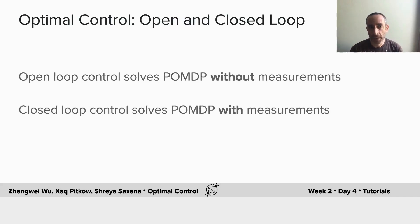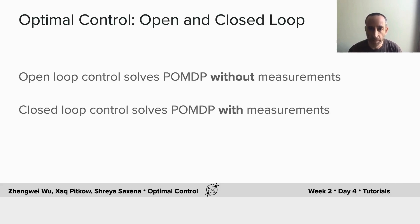There's a distinction between open and closed loop control in optimal control, which is dependent on whether you get to make measurements of the current state. In open loop, you solve the MDP under the assumption that you don't ever know what the future will hold — you just have to make a guess based on your starting point. On the other hand, if you keep measuring what the world is doing as you take actions, this allows you to have closed loop control.